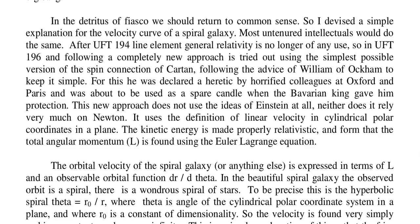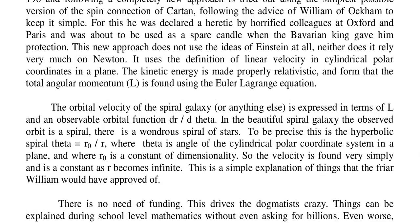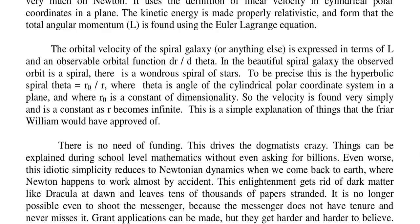It uses the definition of linear velocity in cylindrical polar coordinates in a plane. The kinetic energy is made properly relativistic, and from that the total angular momentum L is found using the Euler-Lagrange equation. The orbital velocity of the spiral galaxy is expressed in terms of L and an observable orbital function dR by dθ. In the beautiful spiral galaxy the observed orbit is a spiral — specifically the hyperbolic spiral θ equals R-sub-zero over R, where θ is the angle of the cylindrical polar coordinate system in a plane, and R-sub-zero is a constant of dimensionality. So the velocity is found very simply and is a constant as R becomes infinite.